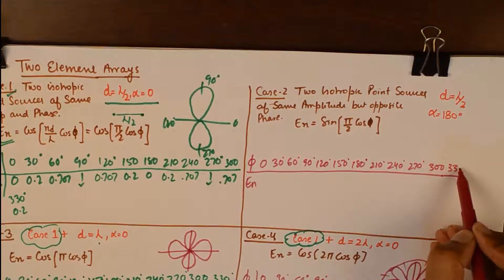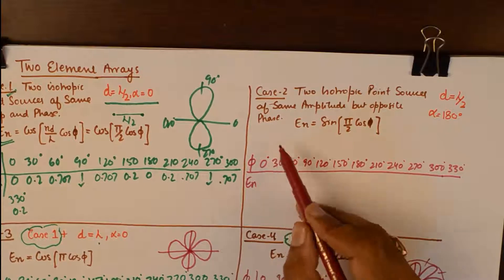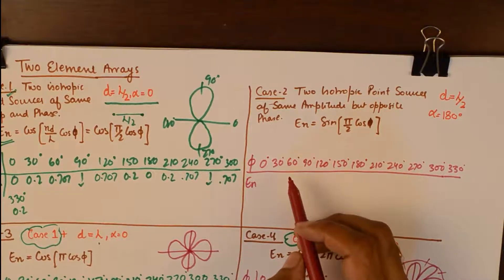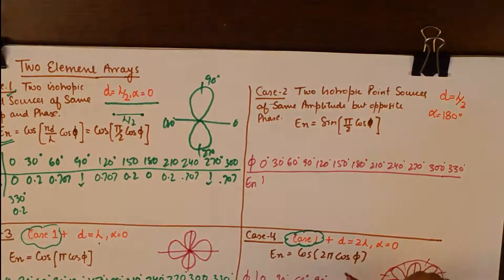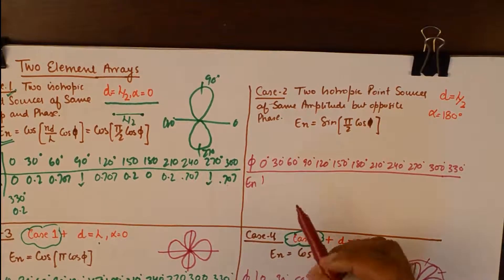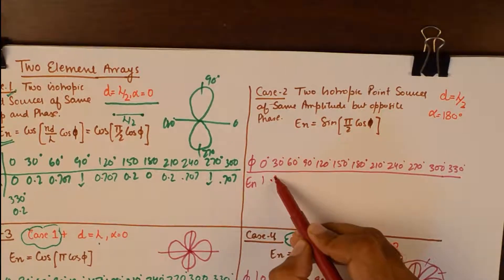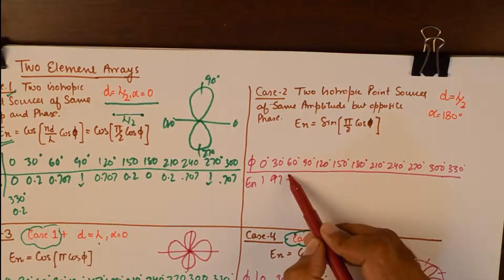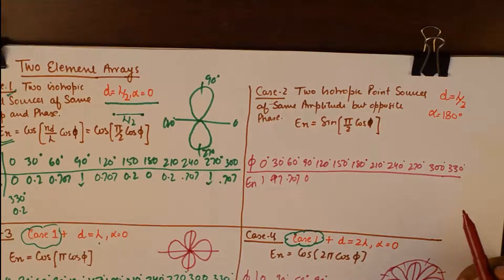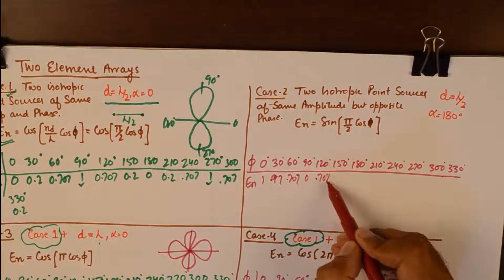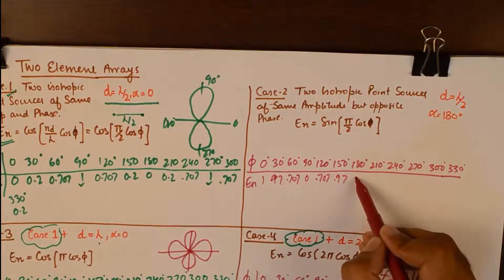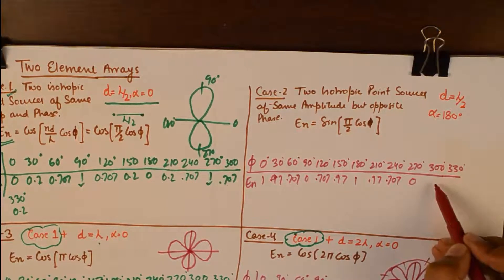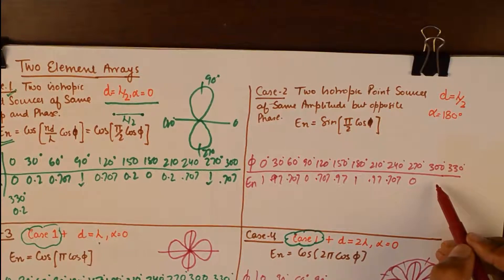So I will write it down. So these are the angles that you must try to find normalized field for, because you can take more angles, these are minimum number of angles that you must take in order to get a good representation of the radiation pattern. This is 0.707 at 30 degrees, 60 degrees is 0.97, 90 is 1, 120 is 0.97. Of course it is symmetrical. So we get a null again at 90 and a maxima at 270, which is opposite to that of broadside.